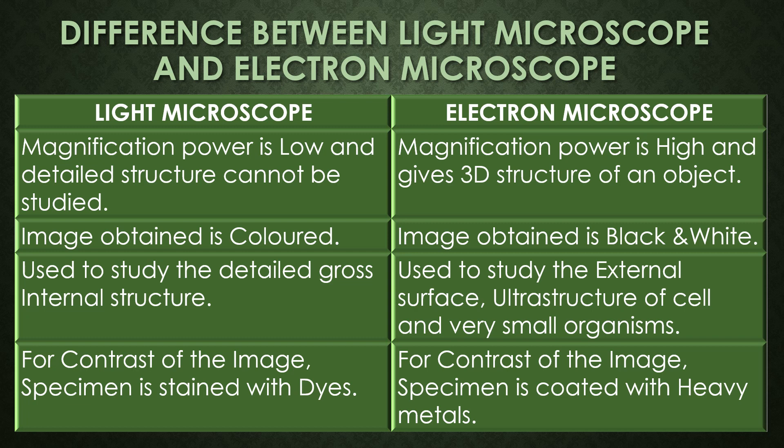In the light microscope magnification power is low and detailed structure cannot be studied. In the electron microscope the magnification power is high and it gives a three-dimensional structure of an object. The image obtained in the light microscope is colored due to the use of various stains. The image obtained in the electron microscope is black and white only. The light microscope is used to study the gross internal structure of various cells, but the electron microscope is used to study external surfaces, the ultrastructure of the cell, and very small organisms.